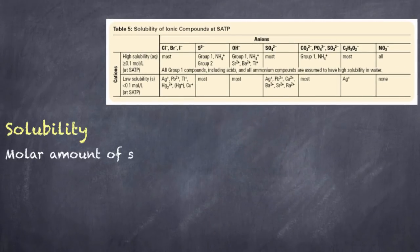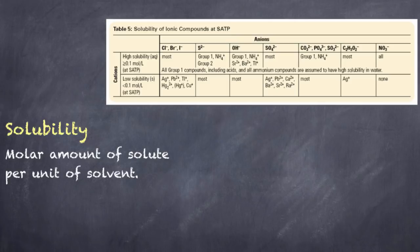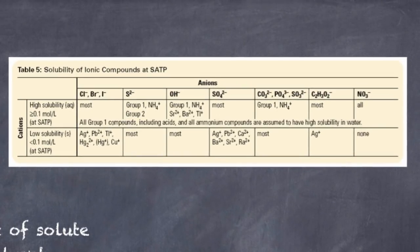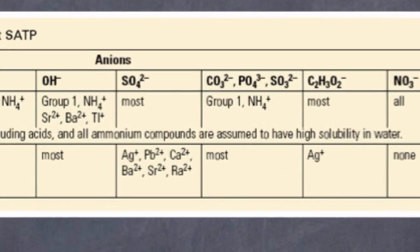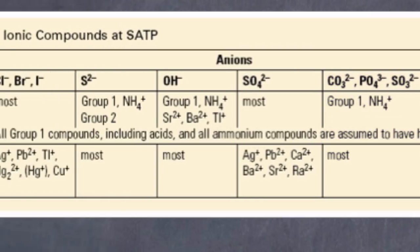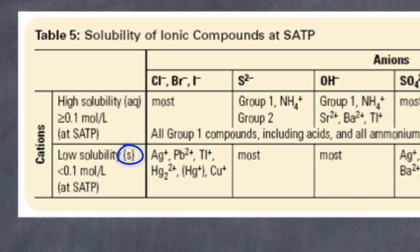Solubility is going to be the molar amount, or the amount in terms of moles, of a particular substance that will dissolve in a particular solvent — for us, that solvent is going to be water. Let's take a look at a compound similar to calcium bicarbonate: calcium carbonate, which I refer to as limestone. Looking at our table, we split it up into cations and anions. The anion for calcium carbonate is the carbonate ion. We see that a few compounds fit in the top cell and will readily dissolve in water, but calcium fits in the cell below, and if we scroll over, we can see it will form a precipitate or solid when coming in contact with water.